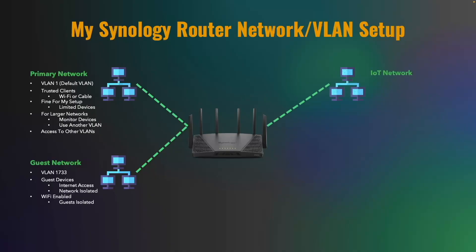For my setup I chose to create an IoT network which I'll assign VLAN ID 102. Devices on the IoT network will be allowed to connect to the internet and to other devices within the same network or VLAN. I'll also enable Wi-Fi since most of the devices in this network will connect wirelessly. The next network I'm creating is the server network, which I'll assign VLAN ID 103. Servers on this network will have internet access and may be accessed by clients on the primary network as well as by other servers on the same network or VLAN. Servers will be physically connected using ethernet so Wi-Fi won't be needed.